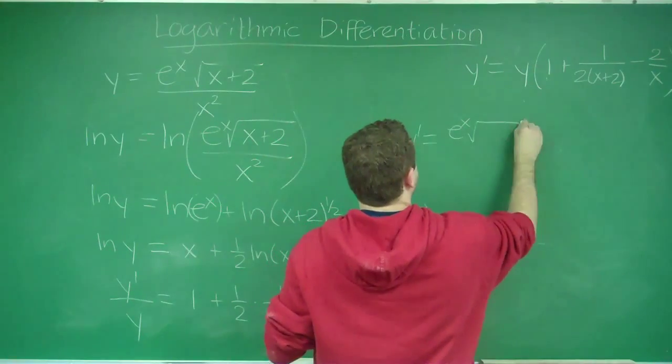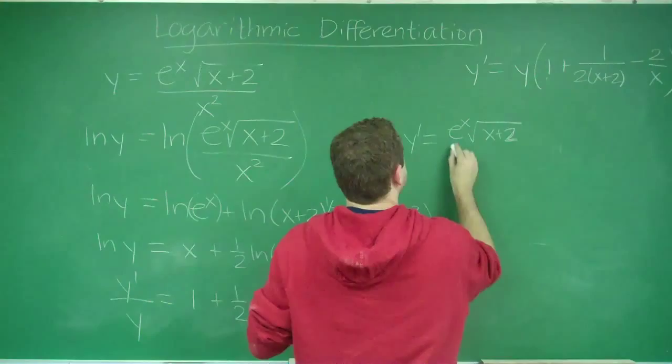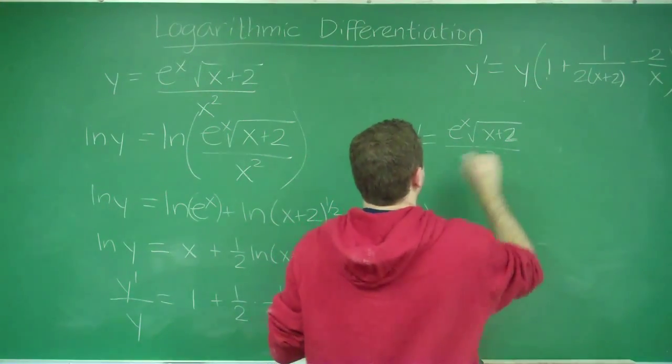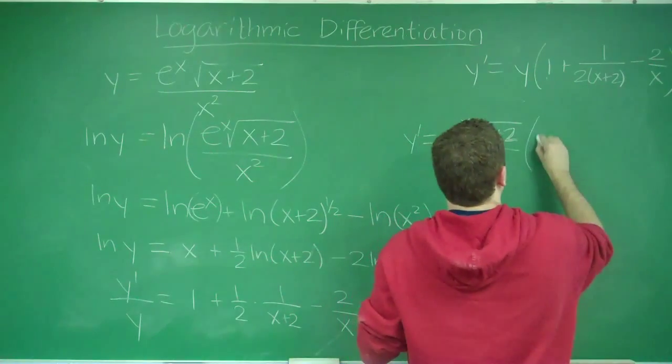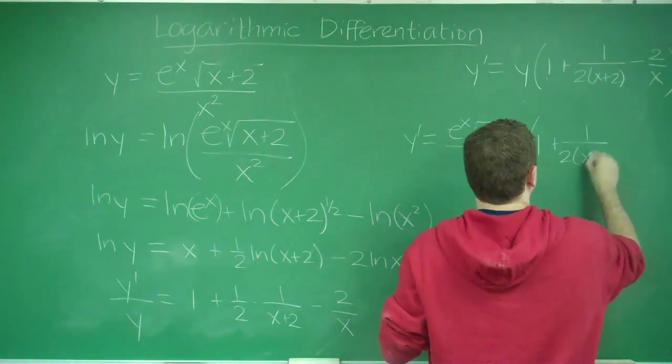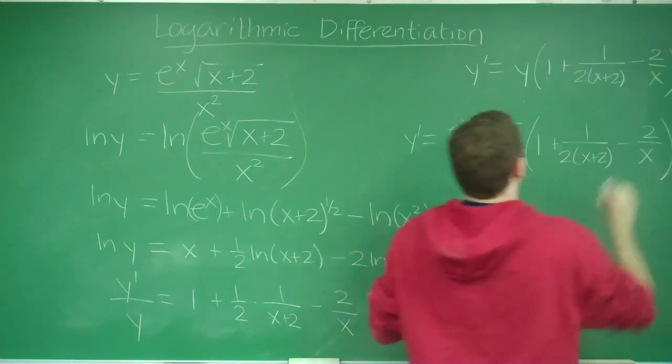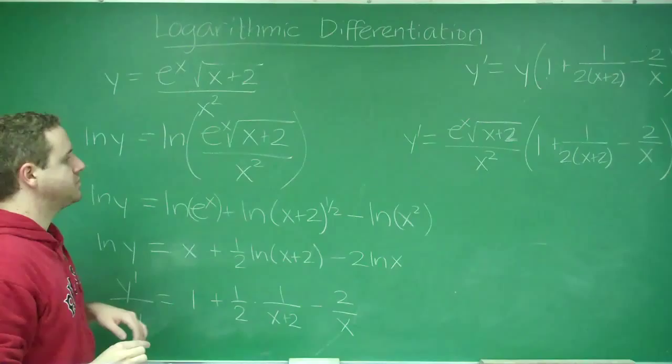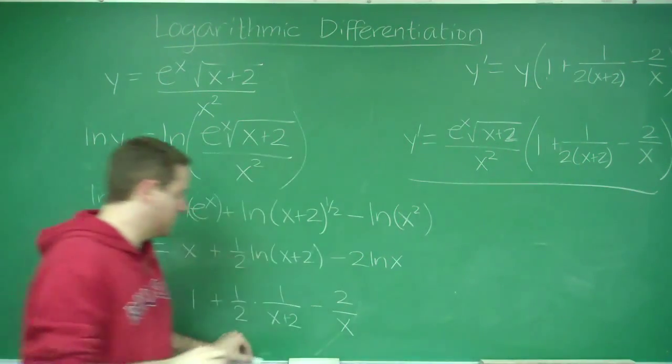So we get e to the x square root of (x plus 2) over x squared times what we had there in parentheses, 1 plus 1 over (2(x plus 2)) minus 2 over x, and this right here would be your final answer for your derivative.